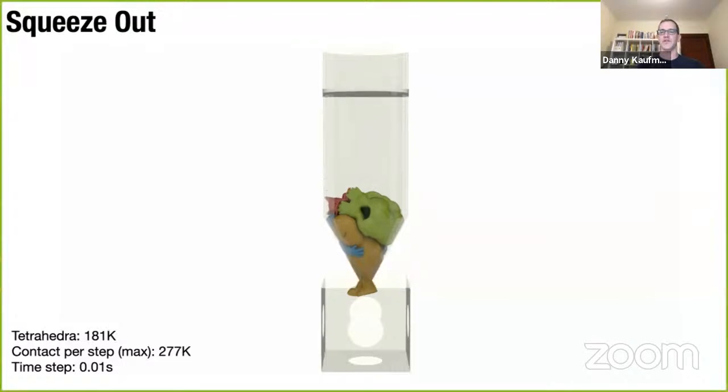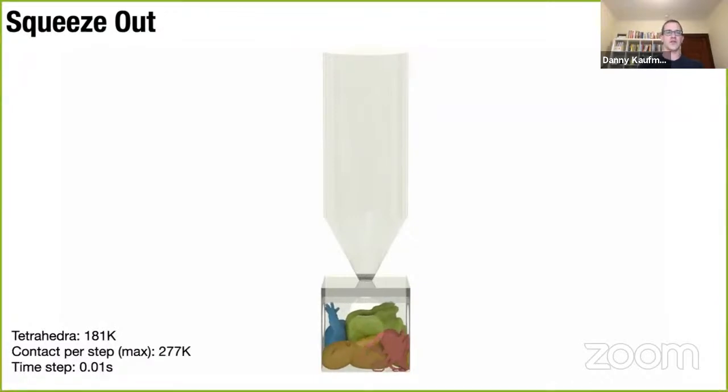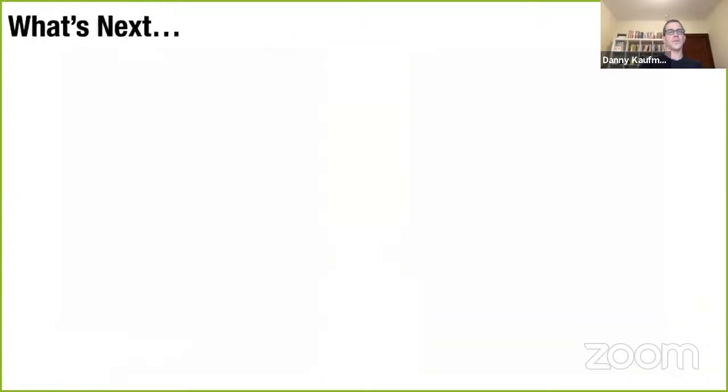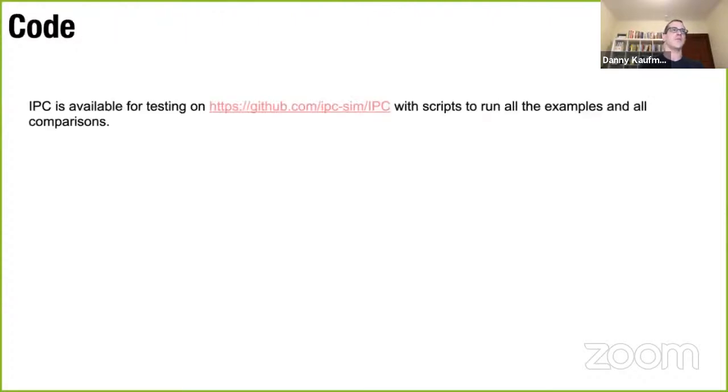So last couple of minutes briefly, I want to touch on maybe what's next here. And I think the first thing that's next is finding ways for everyone to use this code. So proof of the pudding is always in the eating. So one thing to mention is the IPC source code is available online and we have scripts so that you can run these examples and play with them yourselves.